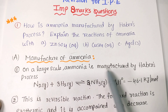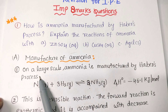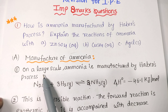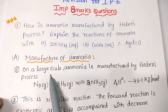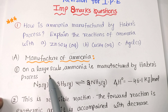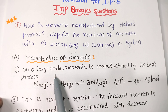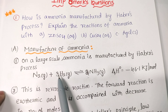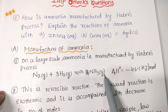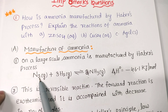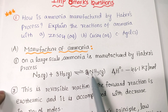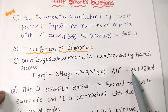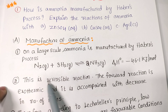Ammonia is manufactured on a large scale by Haber's process, which is one of the most important processes. The reaction is: N2 gas + 3H2 gas gives 2NH3 gas. The forward reaction is exothermic — heat is released. This is a reversible reaction.